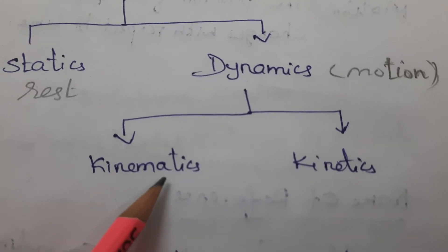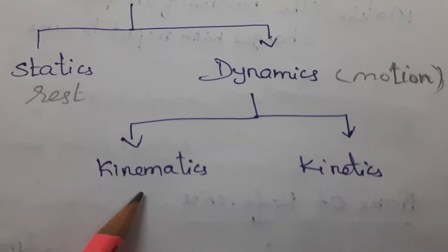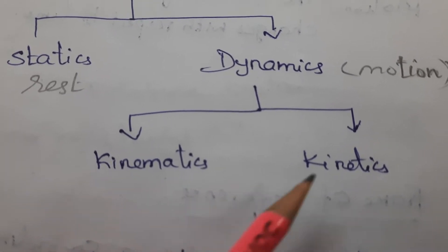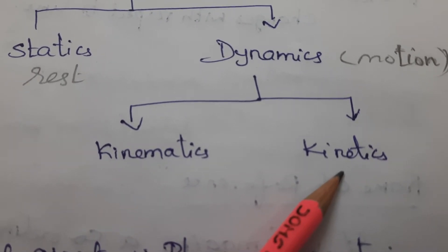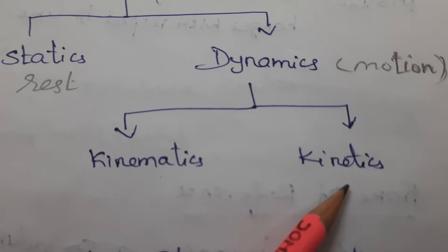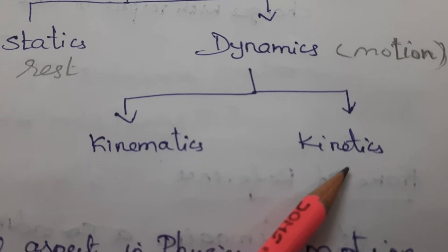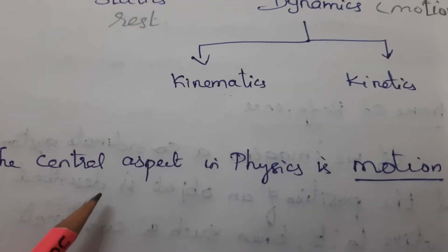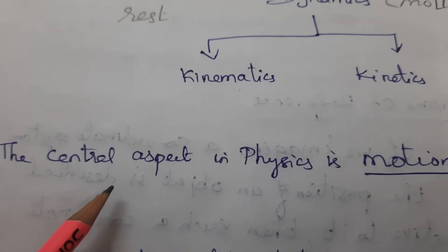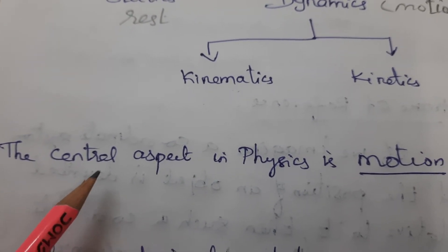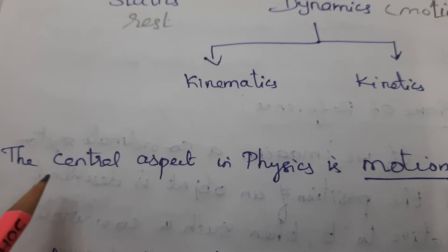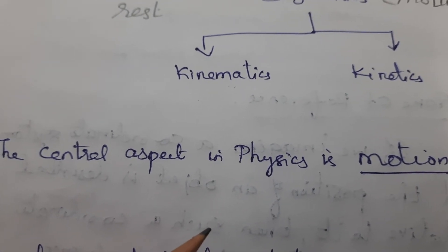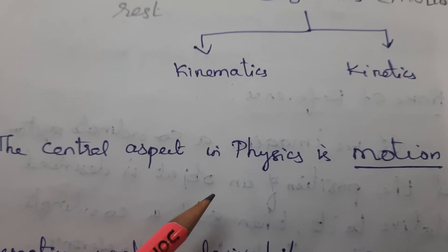Dynamics is further divided into kinematics and kinetics. Kinematics deals with the motion of objects without taking forces into account, but kinetics deals with the motion of objects with forces taken into account. The central aspect in physics is motion — the entire universe is governed by various types of motion.